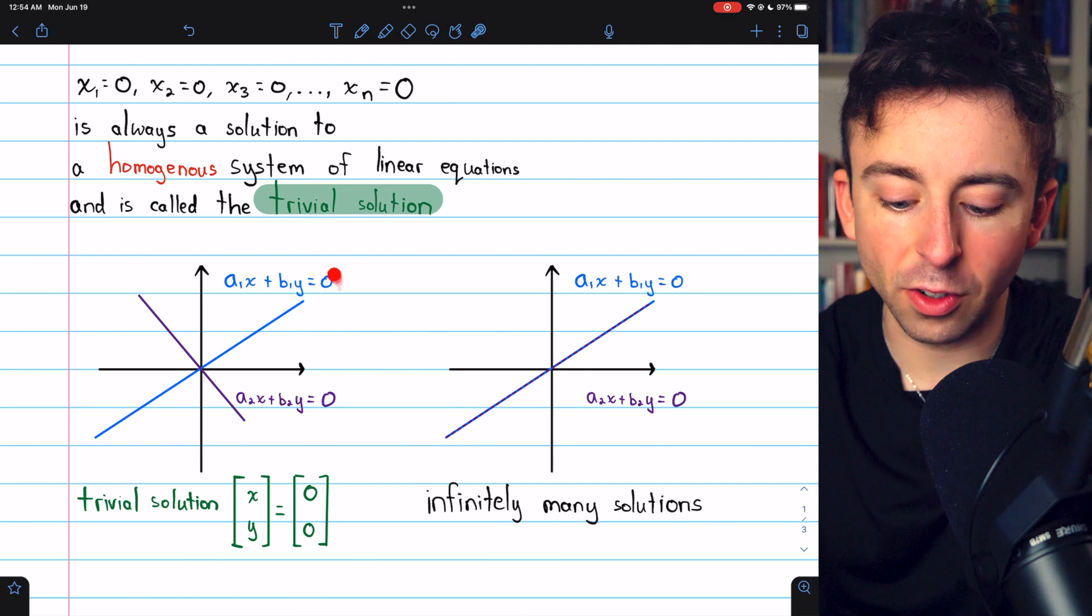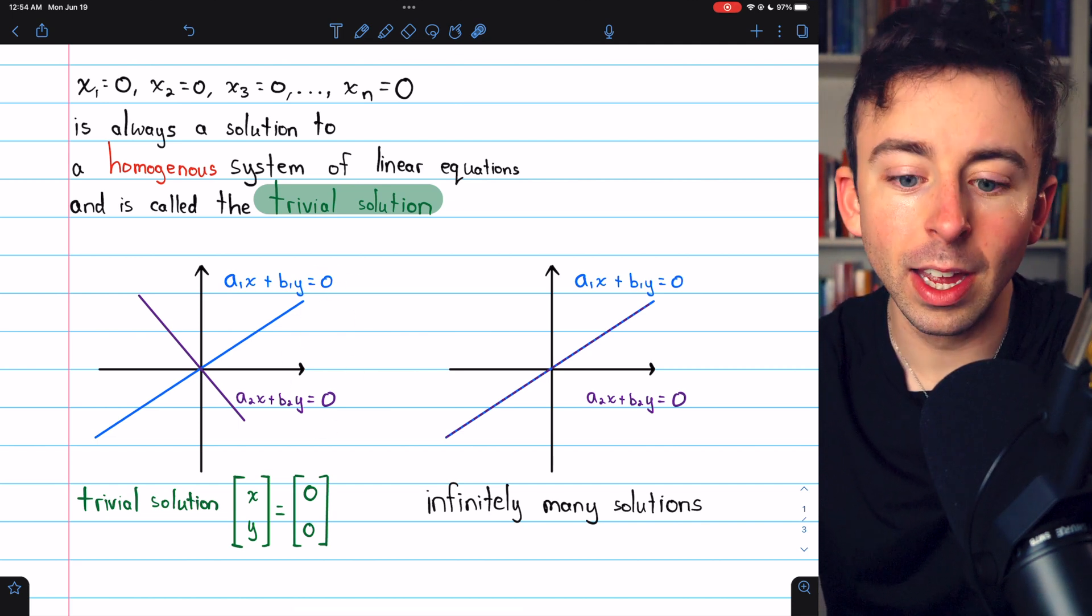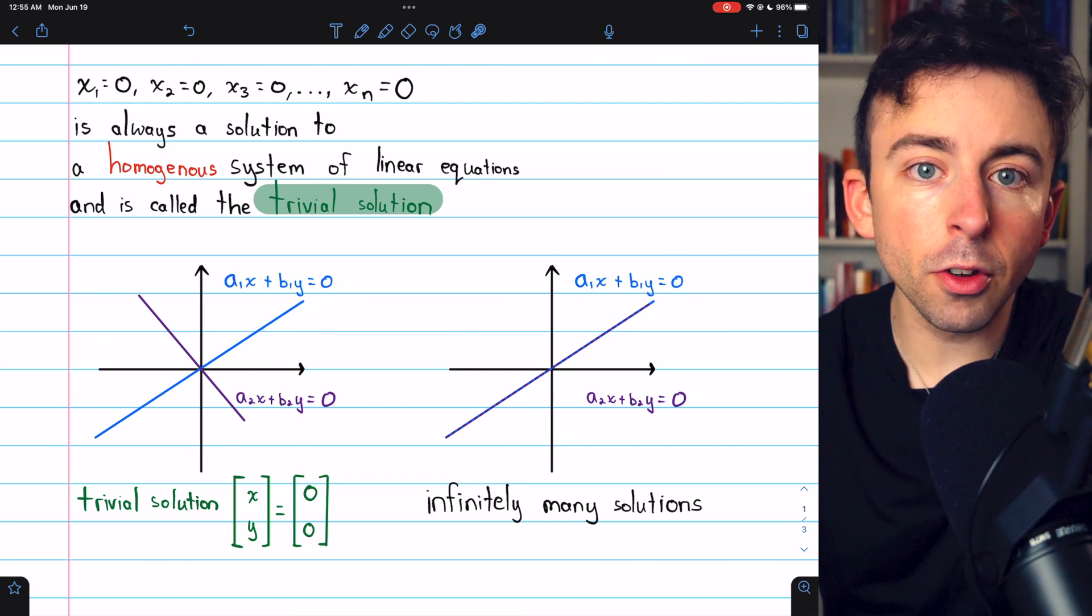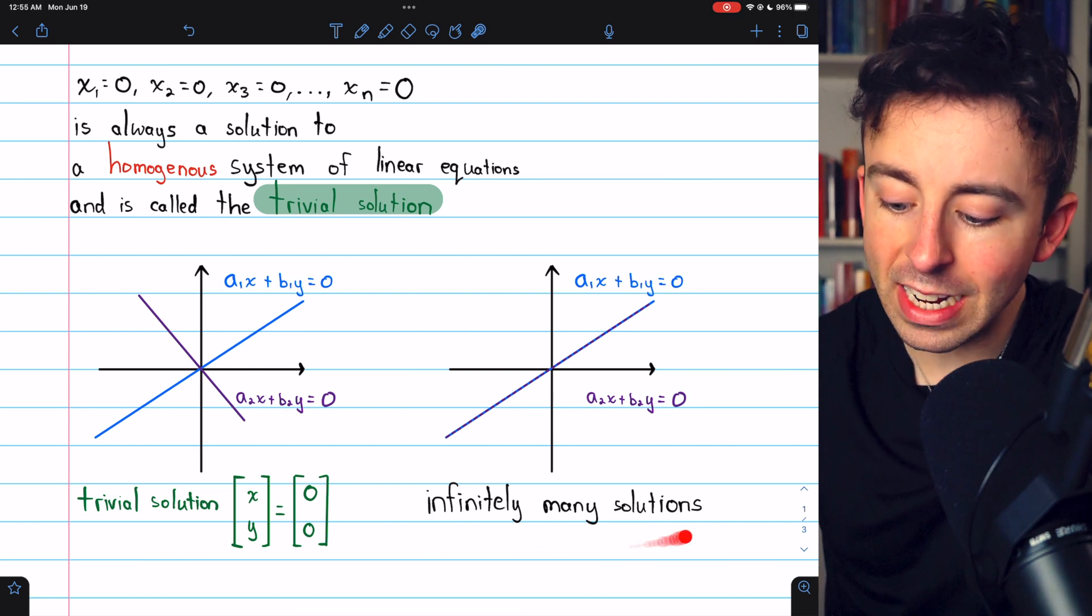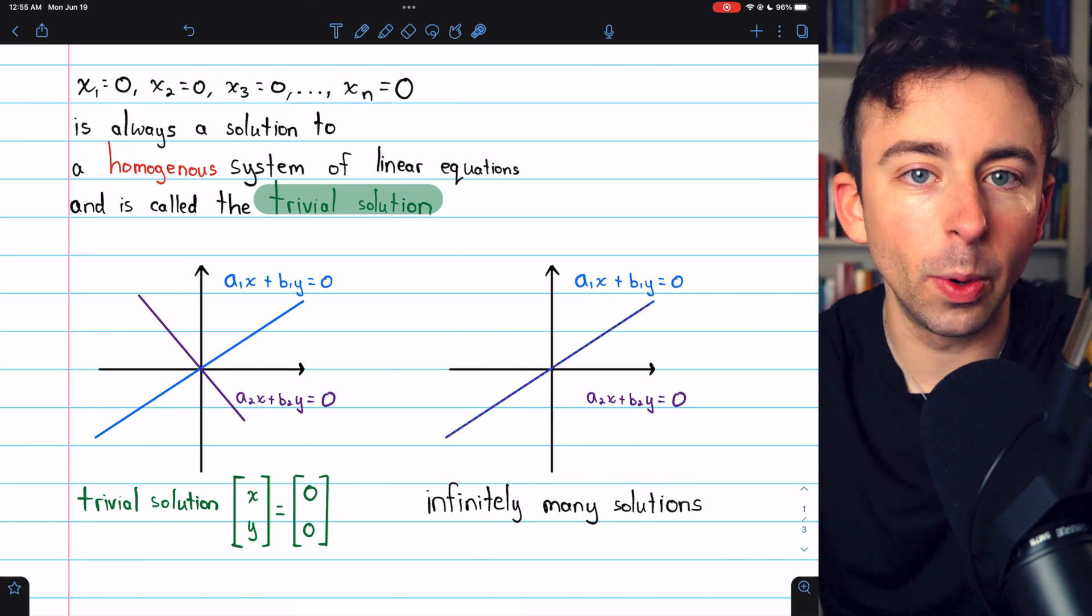Because the constant terms are zero, the y-intercepts of both lines are zero. If we set x and y equal to zero, we get a solution. The only other possibility is that there are infinitely many solutions if the lines exactly coincide.